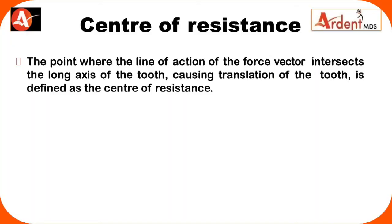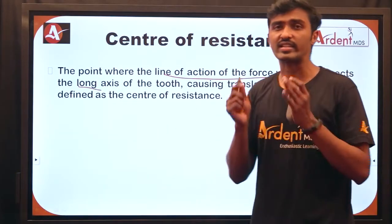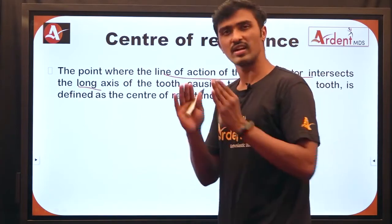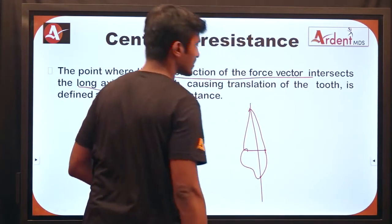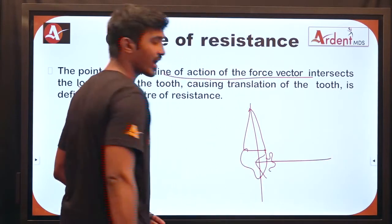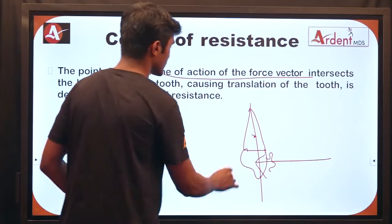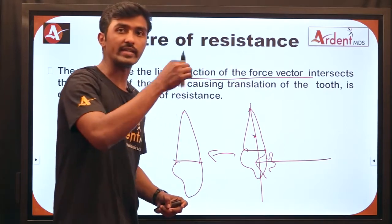From this point onwards we will focus only on center of resistance as it applies to biomechanics on the dentition. Center of resistance is a point where the line of action of the force vector intersects the long axis of the tooth, thereby causing translation or bodily movement of a tooth. When a force is applied at the center of resistance along the long axis, we get bodily movement without any tilting.